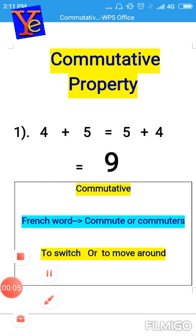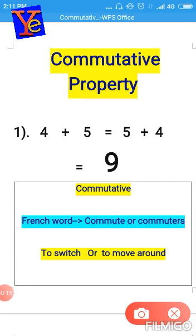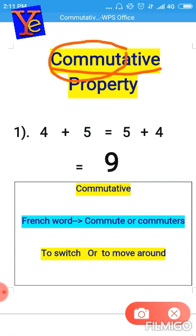Hello, dear students. In this properties series, our next video is all about commutative property. What is the exact meaning of 'commutative'? This word is derived from the word 'commute,' which is a French word meaning 'to switch' — and that is exactly what we do in this property.